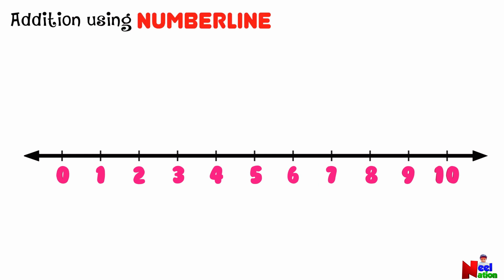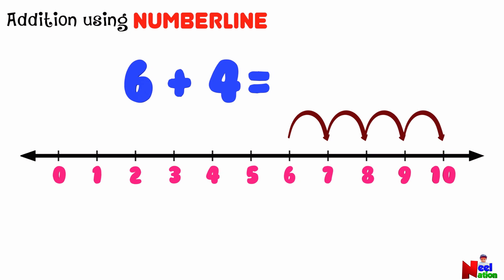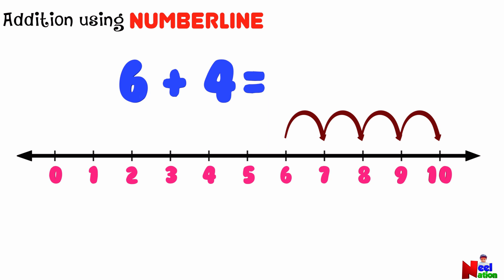Let's do another addition using the number line. This time, can you find what is six plus four? First, let's locate the number six on the number line. To add four more to six, let's make four jumps to the right from number six. After six it is seven, eight, nine, ten. So six plus four equals ten.